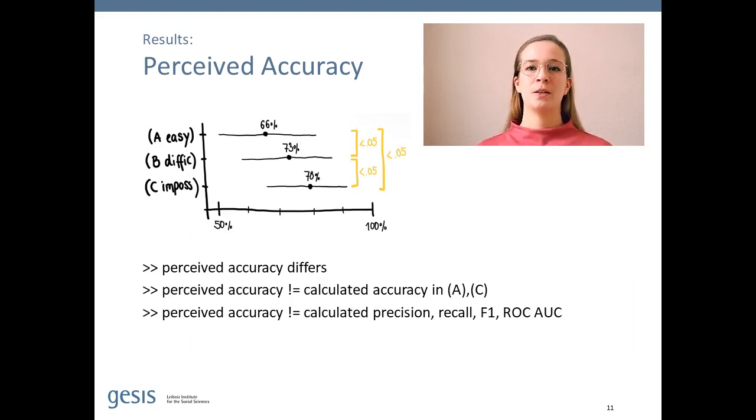Those differences were significant, which means that the type of prediction mistake had a significant influence on how participants perceived the performance, even though all three systems have the same performance on paper.